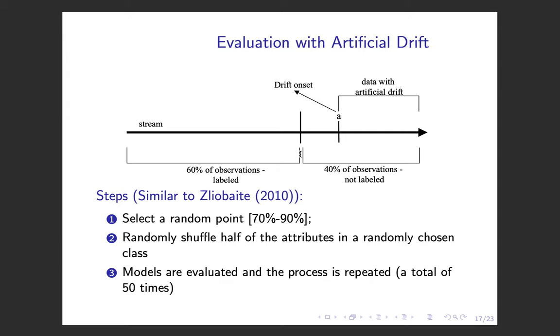Then we deployed the models and assume that no labels are available after this point. To inject the drift, we select a random point from the testing observations. After that point, we shuffle half of the attributes in a randomly chosen class. We evaluate the detectors according to their ability to react to this drift, and we repeat this process a total of 50 times.